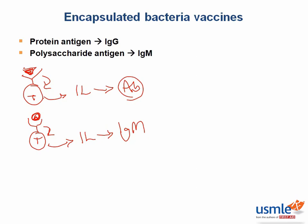But remember that IgG is the most important opsonizing antibody. Therefore, conjugating or linking the polysaccharide antigen to a protein antigen — shown here — means our two antigens are now linked.